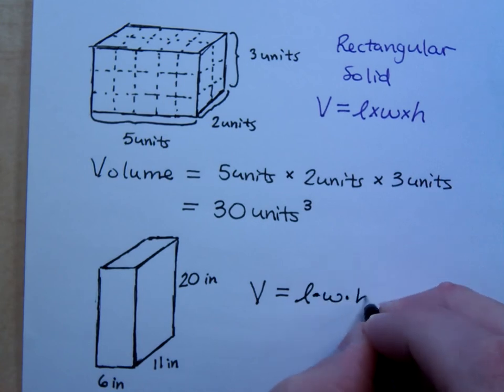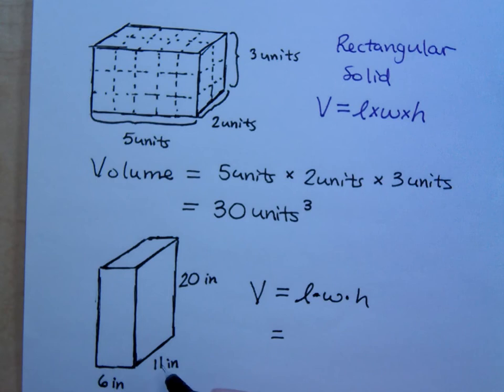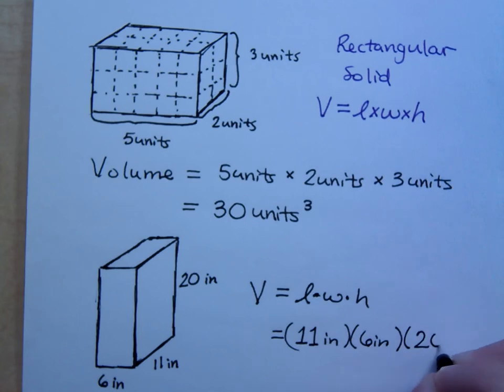Length times width times height. So what's the length? It doesn't really matter. It doesn't matter what you want to call it. If you want to say it's six or 11, I don't care. Maybe you want the length to be 11 inches because it's 11 inches long going into the page. This is 11 inches times what? What's the width? It's six inches. How tall is this? What's the height? 20 inches.